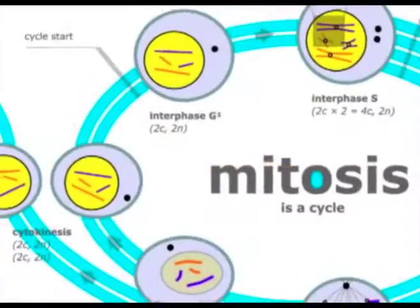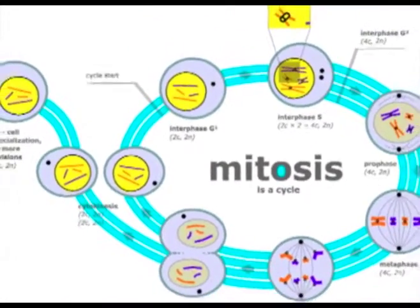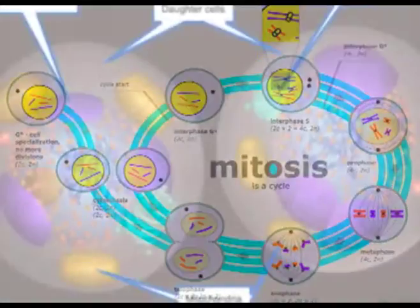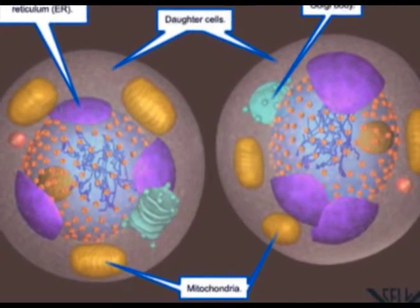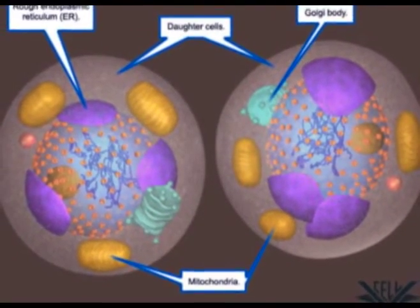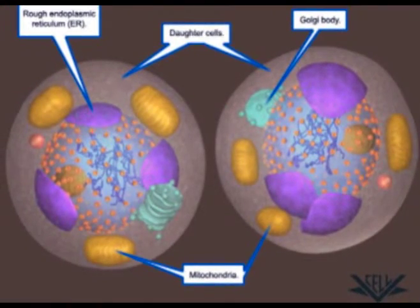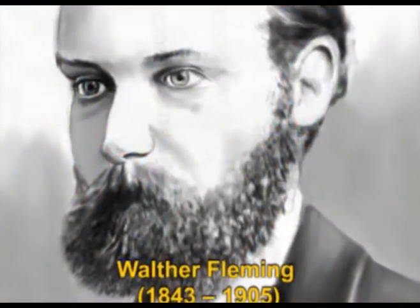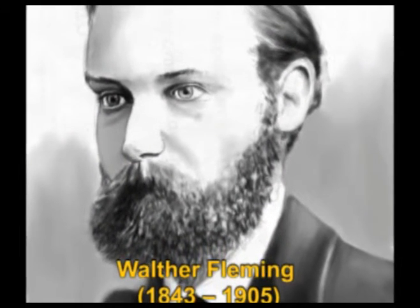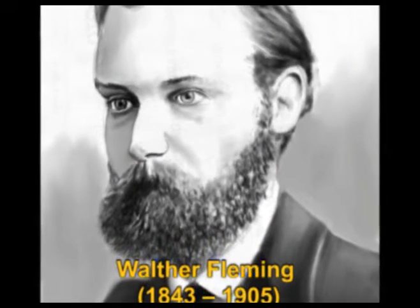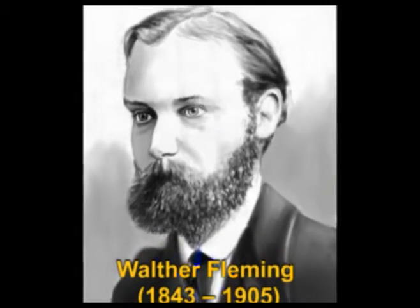Mitosis is a form of eukaryotic cell division that produces two daughter cells with the same genetic components as the parent cell. The term mitosis was introduced by Walter Fleming in 1882.